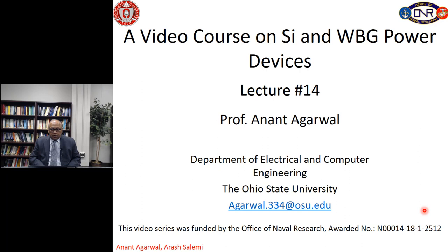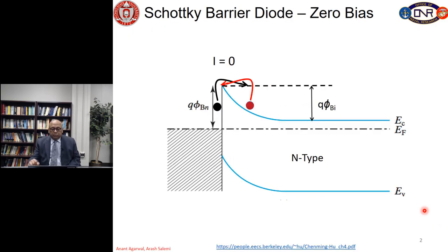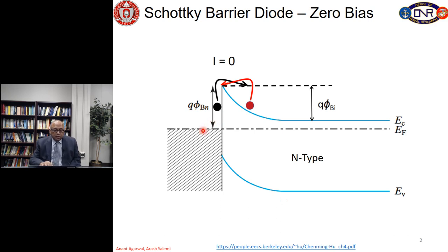Last time we talked about the forward bias Schottky diode. Today we will talk about the reverse bias Schottky diode. Just to remind you, this is the energy band diagram with zero bias across the Schottky, so no net current is flowing. You have the semiconductor on the right-hand side and the metal on the left-hand side.